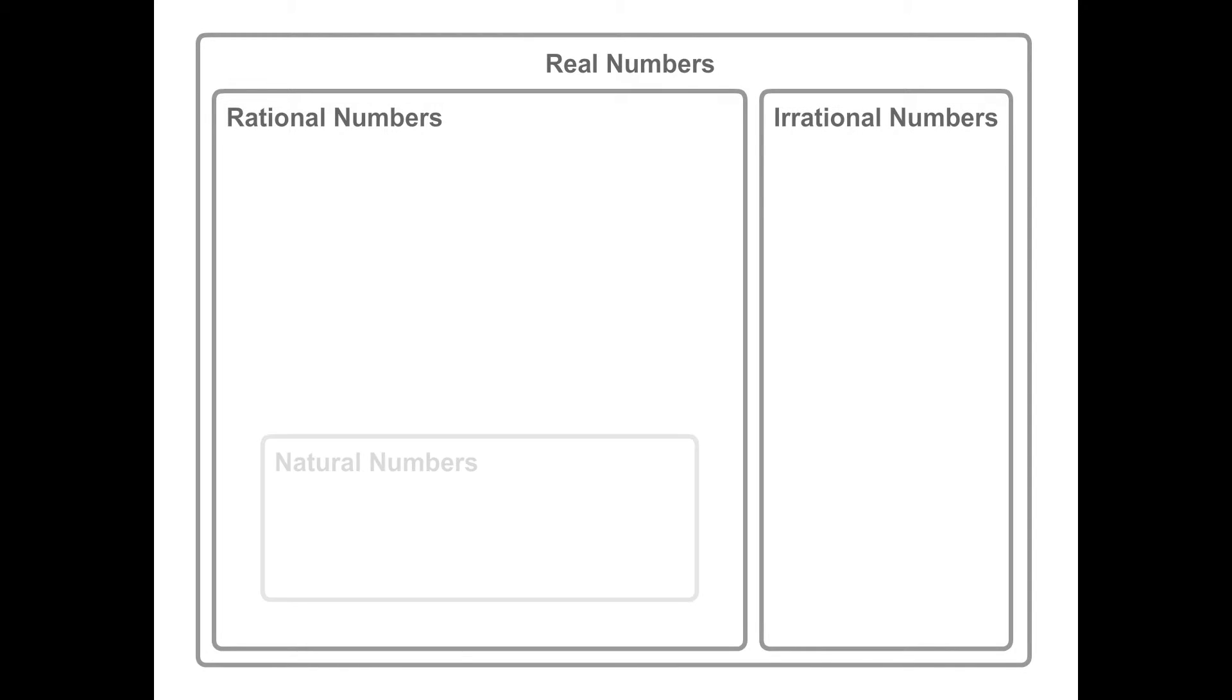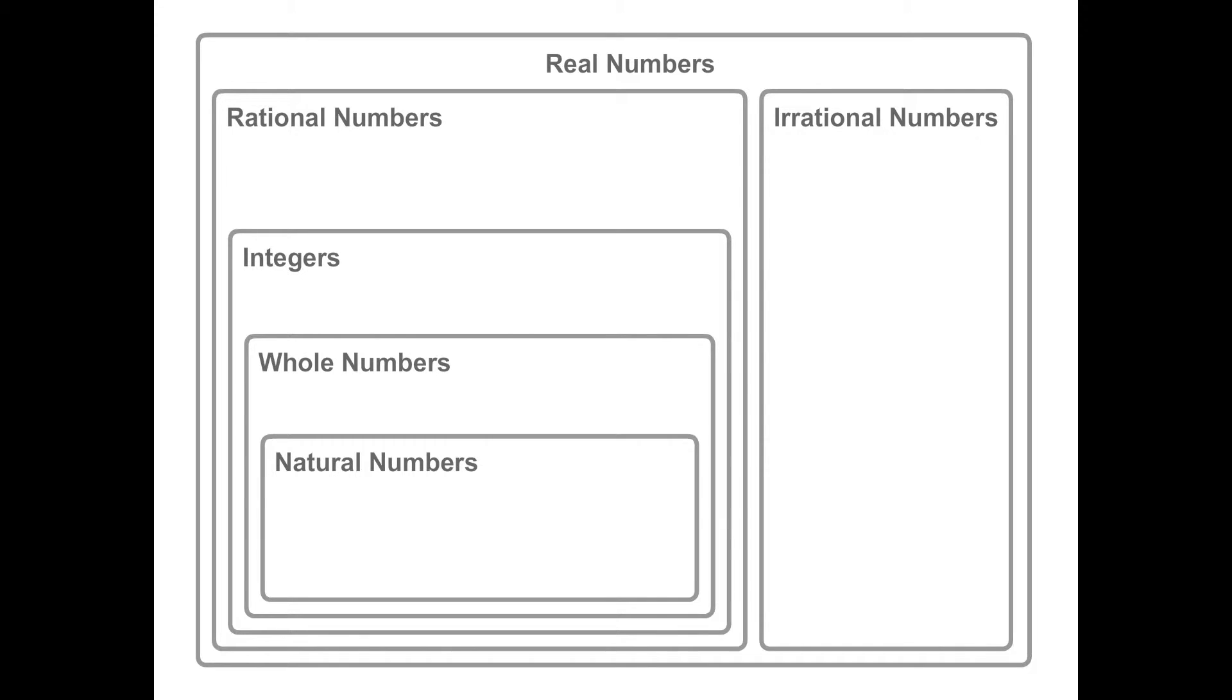Let's look at the relationships and the hierarchy of the real numbers. Natural numbers were the first numbers you learned, the counting numbers: 1, 2, 3, 4, and so on. Add 0 and you have the whole numbers. Add the negative integers to the whole numbers and you have the set of integers.